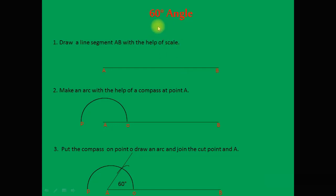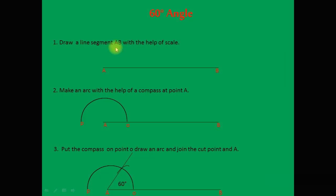To start the construction of an angle, let's first construct an angle of 60 degrees. First of all, draw a line segment AB with the help of a ruler. If you are given the measurement of the line segment, draw it according to that measurement. But you can also draw a rough estimate line AB — suppose 4 cm, 3 cm, or 5 cm. Then make an arc with the help of a compass at point A or point B.